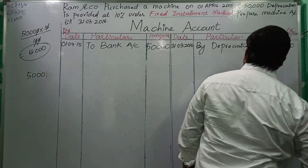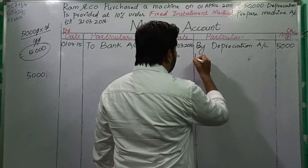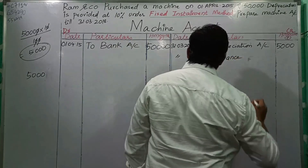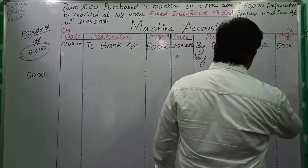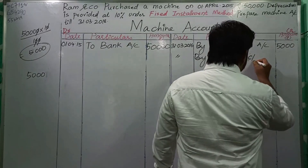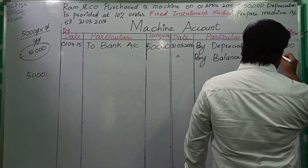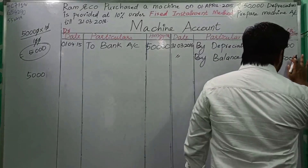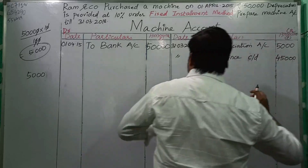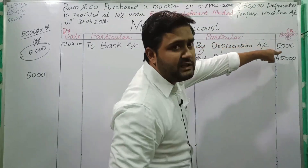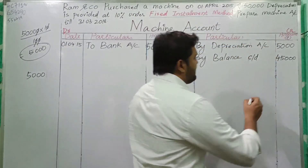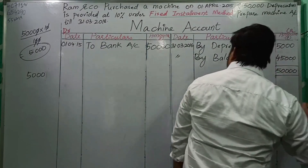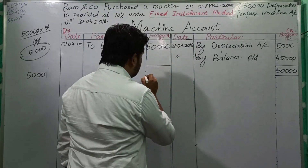By balance carried down: after one complete year of machine usage by Ram and Company, the balance carried down is 45,000. This is calculated as cost of asset 50,000 minus depreciation 5,000 equals 45,000. The total on both sides is 50,000.